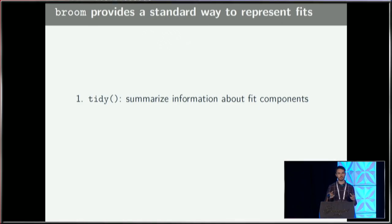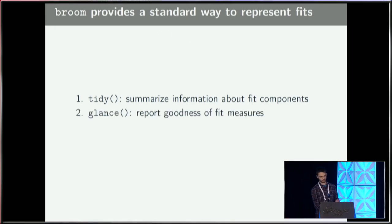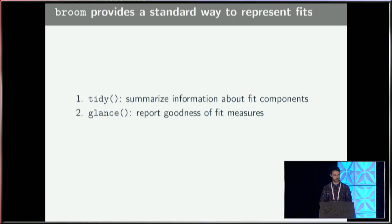The first type of information is the components or parameters. For a linear regression model, think about the regression coefficients — there will be a table with all the information about them. An S3 generic called tidy will provide that. The second generic is glance, which always returns a tibble with one row where the columns are different goodness-of-fit measures — things like R-squared, log likelihood, BIC, or other information criteria. It's a one-row summary of the entire model.